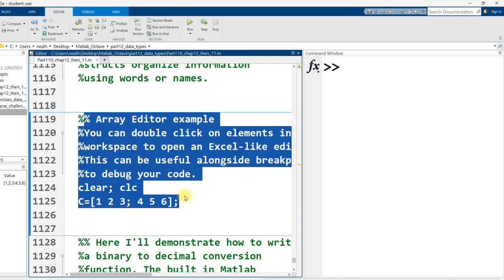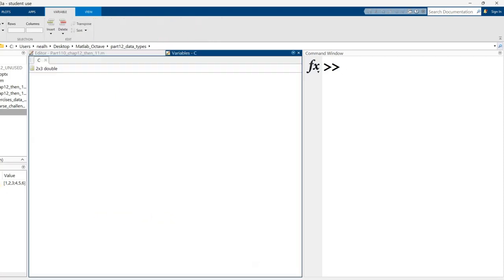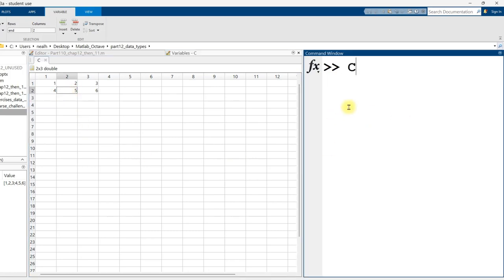So let's get to this Array Editor example. I'm just creating a matrix right here, a little 2x3, and I'm going to show you that I can double-click on it in the workspace and open up this Array Editor. It's very much like an Excel spreadsheet, and I can change the values. So here, let me just go into the command window and type out C.